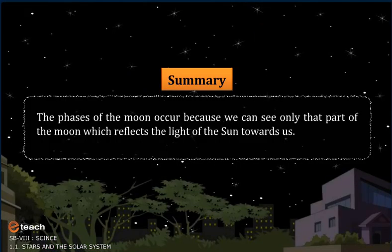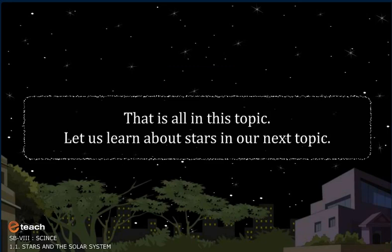The phases of the moon occur because we can see only that part of the moon which reflects the light of the sun towards us. That is all in this topic. Let us learn about stars in our next topic. Thank you.